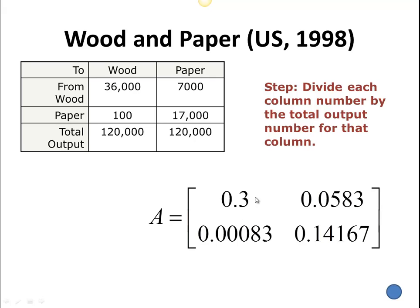So to produce one unit of wood, we're going to use 0.3 units of wood. Then for paper, we've got 100 divided by 120,000, and that gives us 0.00083 — so to produce one unit of wood, we're using up 0.00083 units of paper. Then for the next column, for an output of one unit of paper, we take 7,000 divided by 120,000, which gives 0.0583. Take the 17,000 divided by 120,000, and we have 0.14167 rounded off. So we now have our numbers in terms of producing one unit of paper and how much we consume for one unit of each.